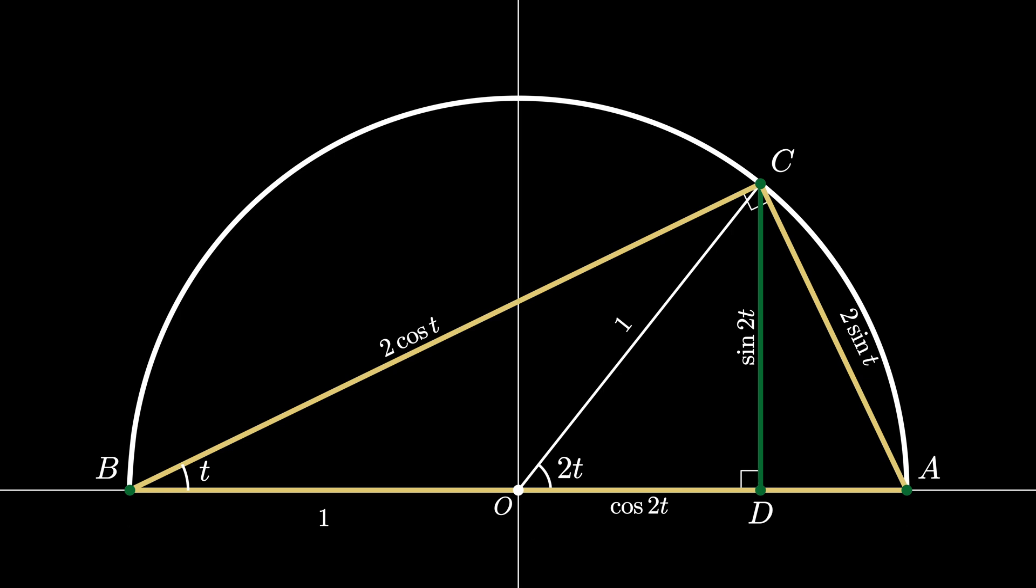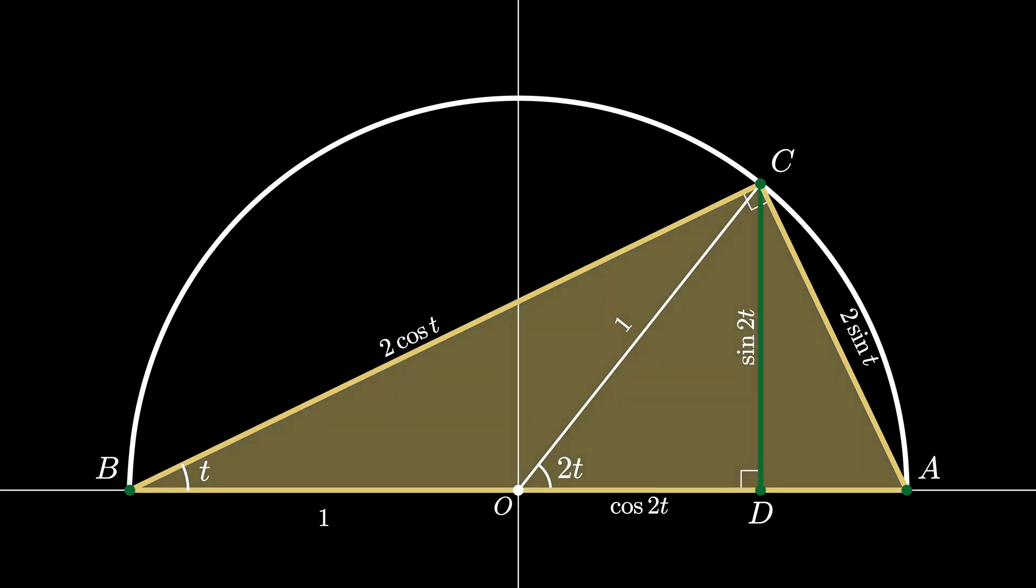Now we have enough information to prove our double angle identities. This yellow shaded triangle is a right angled triangle with one angle t and this red shaded triangle is also a right triangle with one angle t. So these two triangles have the same angle measurements and that means that they're similar right triangles.